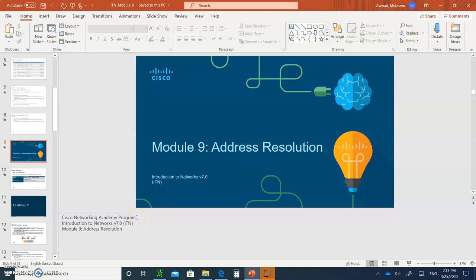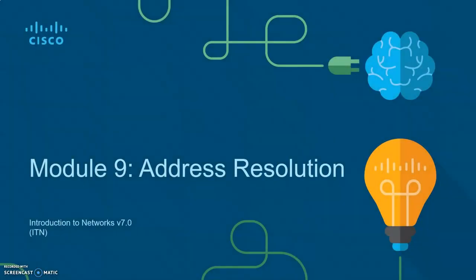Hello, and welcome to Introduction to Networks, Module 9, Address Resolution. In this chapter, we're going to talk about specifically ARP, and something that is equivalent to ARP for IPv6. It should be a very quick chapter.